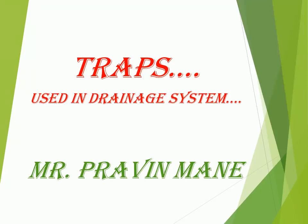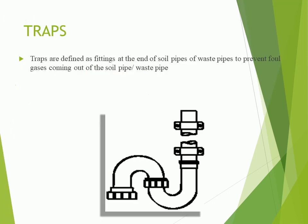Hello friends, through this video we will learn the various types of traps used in drainage systems. Traps are defined as fittings at the end of soil pipes or waste pipes to prevent foul gases coming out of the soil pipe or waste pipe.